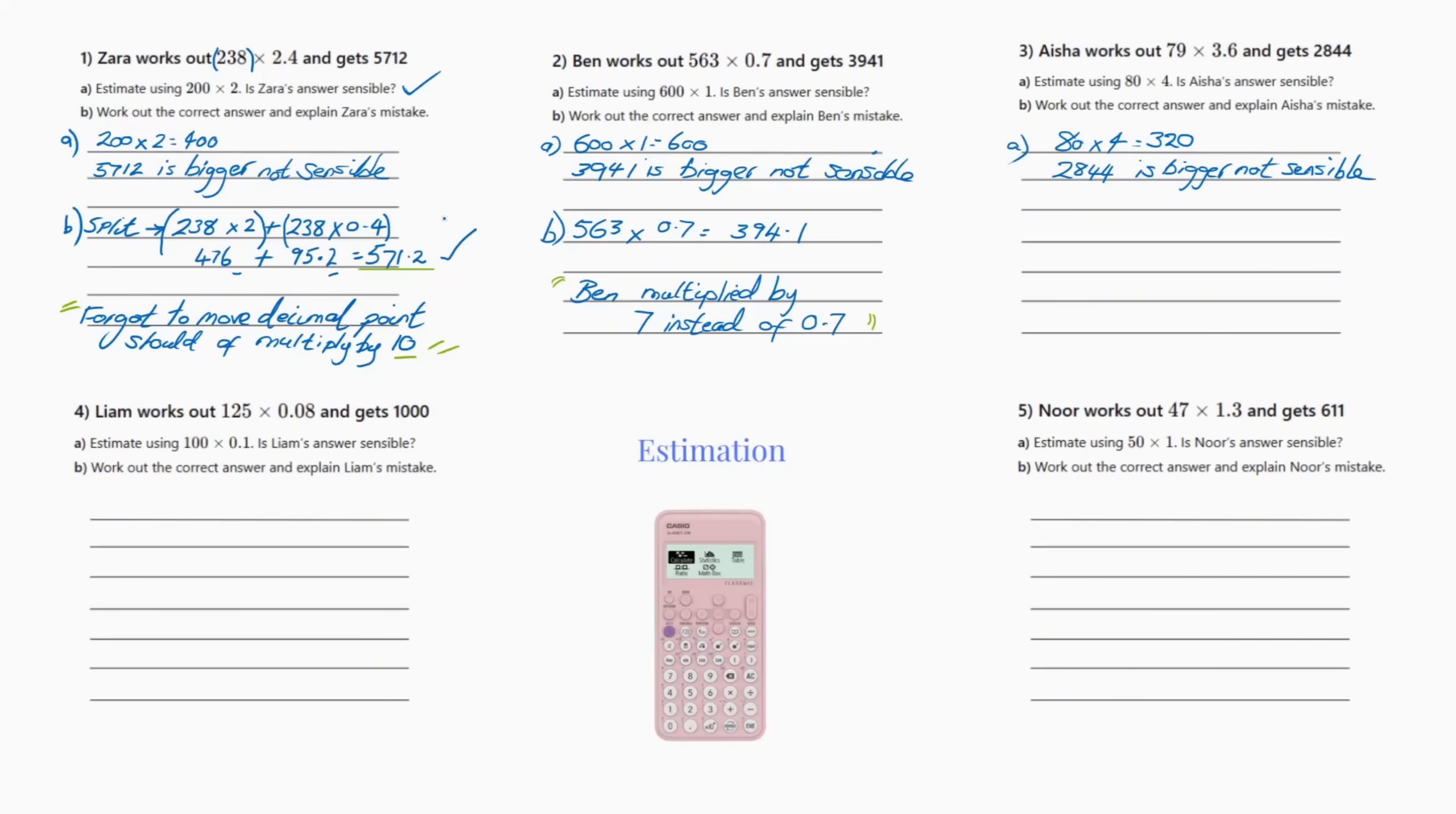So the question is what was Zara's mistake? It's asking you to explain Zara's mistake. Now that could be one mark just to explain it. And all she's done is she's forgot to move the decimal point, so in theory she should have multiplied it by 10. If she'd done that she would have got 5712.